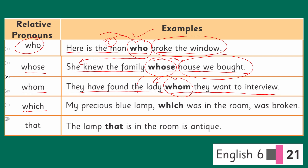For 'which' in the sentence: 'My precious blue lamp which was in the room was broken.' This relative pronoun 'which' is talking about 'the precious blue lamp' and connecting it with the later part of the sentence — 'was in the room was broken.' So this part is being related to the part before the relative pronoun.